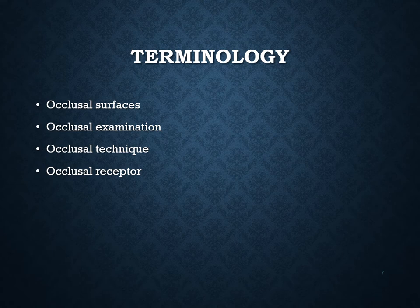The occlusal examination is the type of radiographic examination used to inspect a large area of the maxilla or mandible on one image. The occlusal technique is the method used to expose that receptor, and the occlusal receptor is any receptor used in the technique. Typically, the recommended size for an adult is a size 4, which is about 3 by 2.25 inches. On a child, the recommended size is a size 2.